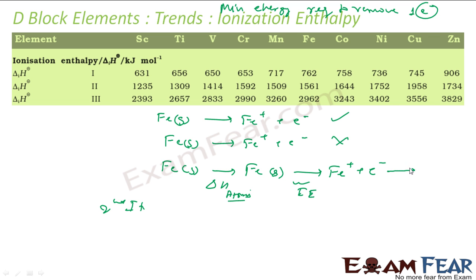then from this Fe you make Fe 2 plus. So this is second IE, second ionization energy. And this is first ionization energy. Talk about third ionization energy. From this you take one electron out and you make Fe 3 plus. So this will be third ionization energy. Okay.